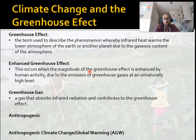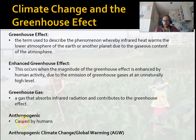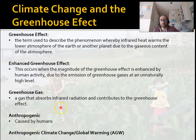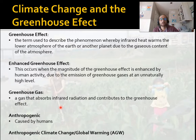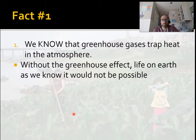A greenhouse gas is a gas that absorbs certain types of radiation and doesn't absorb others. An important general term is anthropogenic — anything caused by humans. 'Anthro' means people, as in anthropology, and 'genic' comes from genesis, meaning beginning — so caused by humans. You can have anthropogenic climate change, anthropogenic biodiversity loss. AGW — anthropogenic global warming — is the component of climate change believed to be caused by humans.